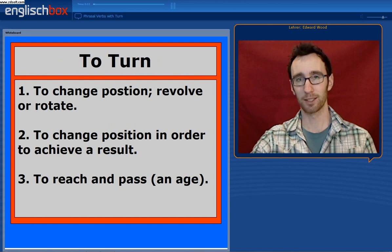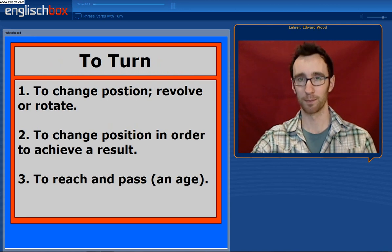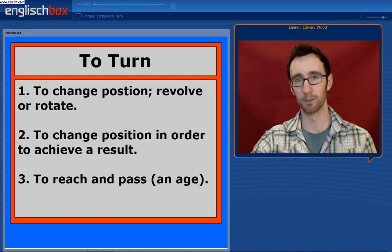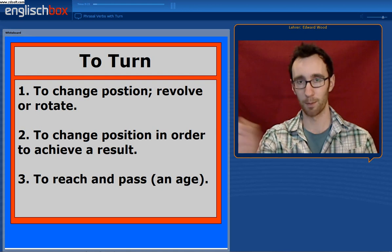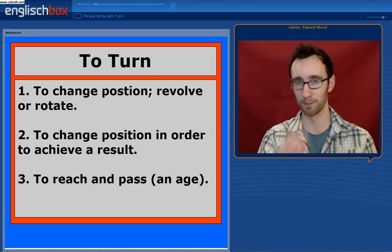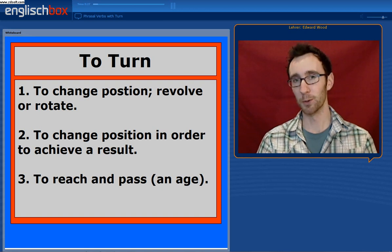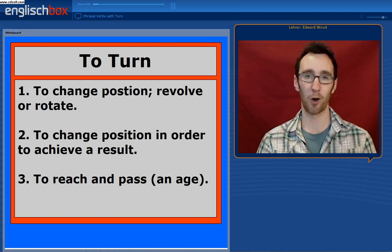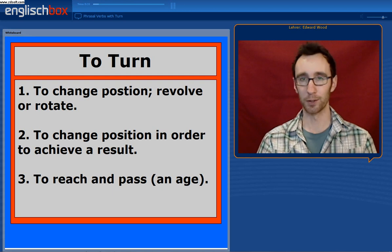So first of all, let's look at some definitions of the verb itself. Firstly, it can mean to go around, to rotate or revolve. For example, when a person turns or turns around. It can also mean to change the position of an object in order to achieve a result.